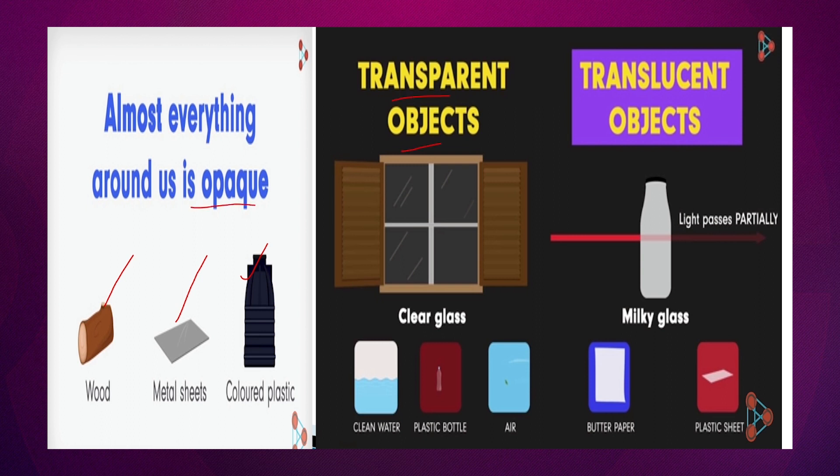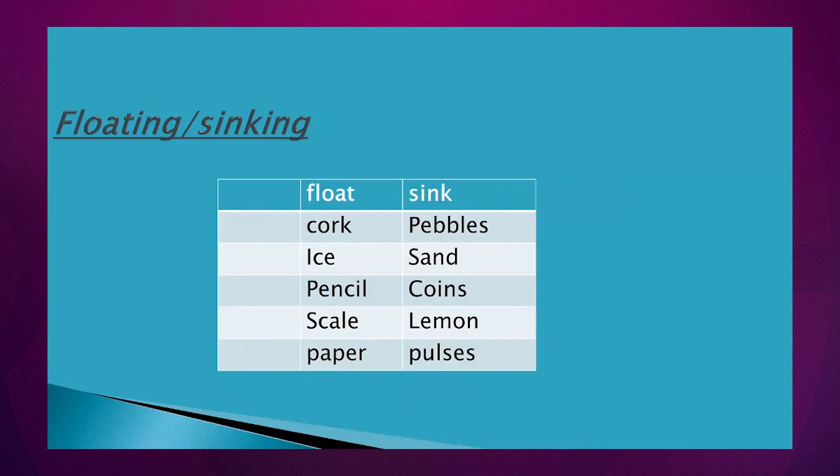Aise transparent objects ke ki aapko learn bhi karna hai. Inki definition nahi nahi peeche di hui hai, woh bhi learn karni hai. Exam mein aati hai. Toh aapke abhi araam se aapke revise kar sakti hai is chapter ko. Aapke exam mein aane wala hai ye chapter. Next is your translucent object. Is mein aapko jaise milky glass hota hai, jispe halka light polish hoti hai, ya butter paper hai aapka, ya plastic sheet hai. Ye sab jo hai translucent objects hai.